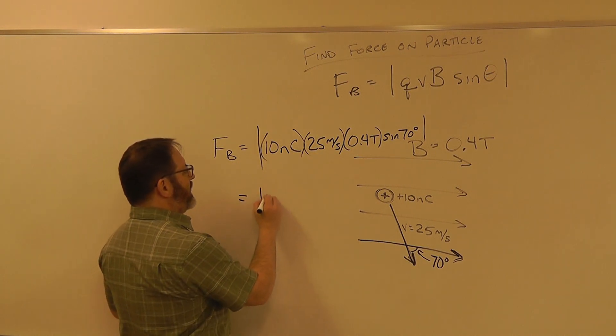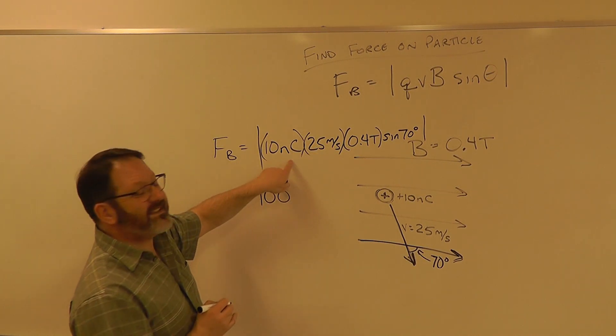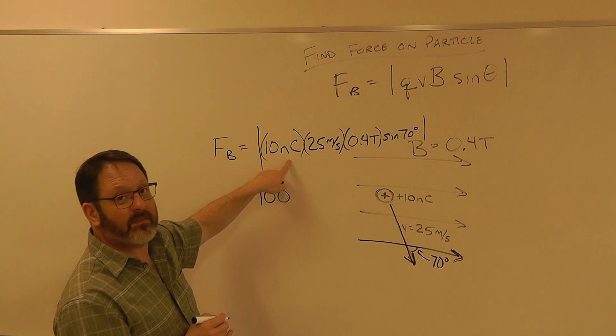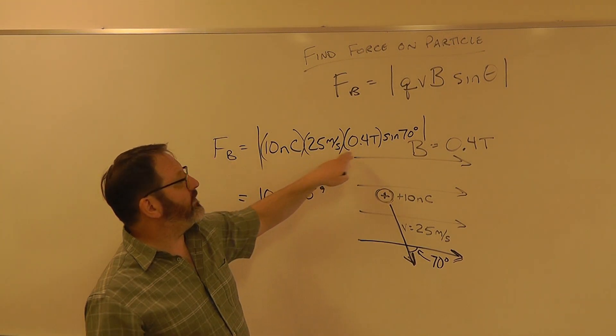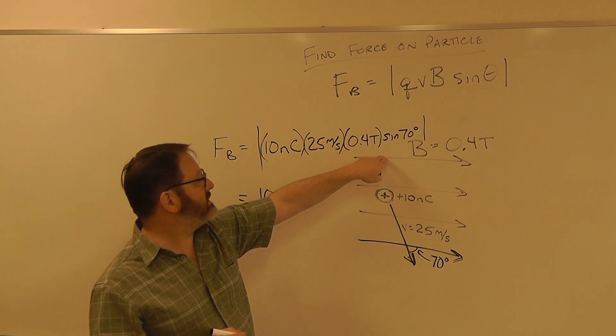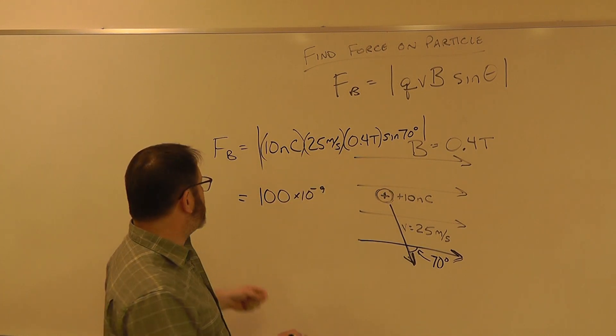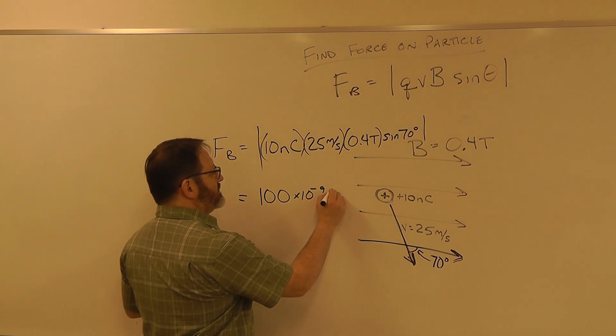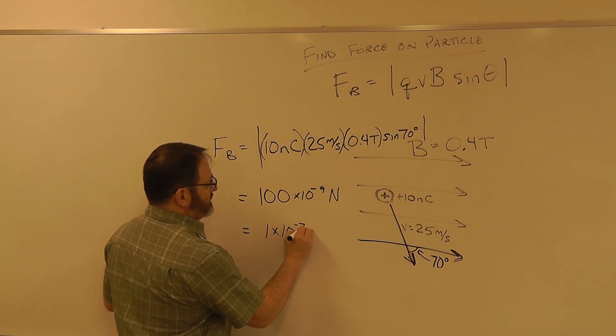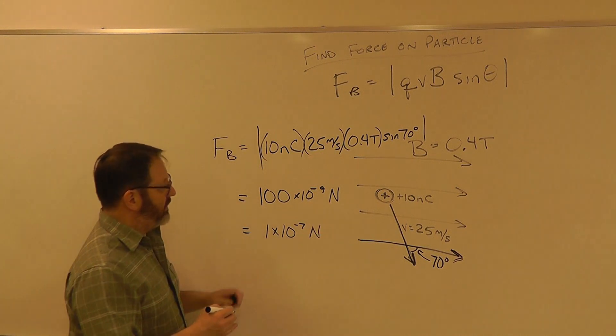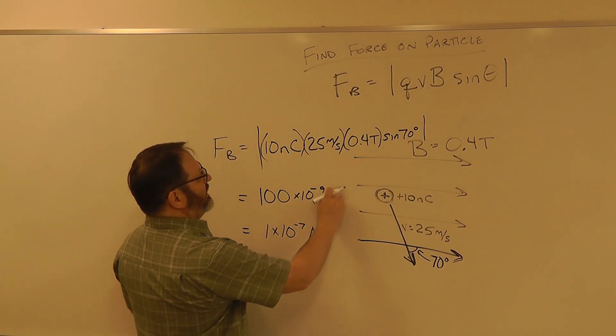This is nanocoulombs, so that's 10 to the minus 9, times 10 to the minus 9. Since I have all SI units here, I know my answer is going to come out also in SI units, so it's going to be newtons. That's 1 times 10 to the minus 7 newtons.